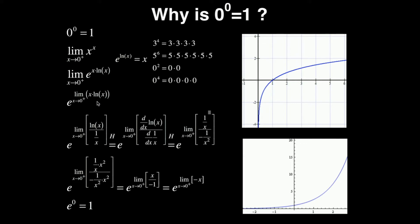So what I'm going to do is I'm going to actually pull this x into the denominator here as 1 over x. So I have it written here. We have e to the limit as x approaches 0 from the positive side of natural log of x divided by 1 over x. Notice I didn't change the value of this argument inside the limit.